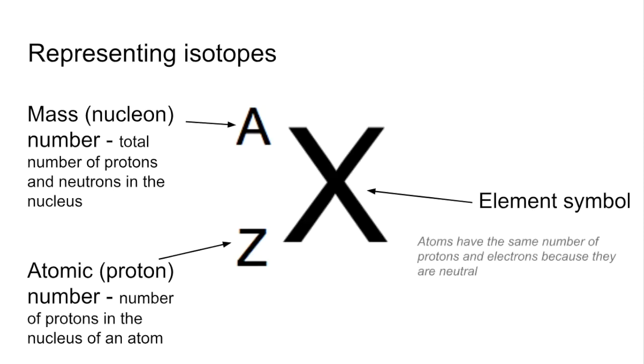So what about the electrons? Well atoms have the same number of protons and electrons because they are neutral. If you remember the protons have a one plus charge, the electrons are one minus and so therefore if they're the same in number the atom will be overall electrically neutral, no overall charge.